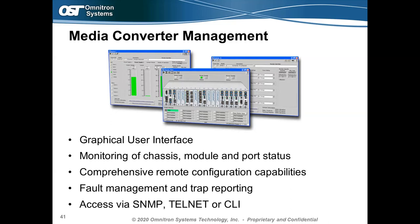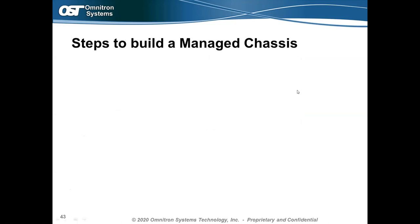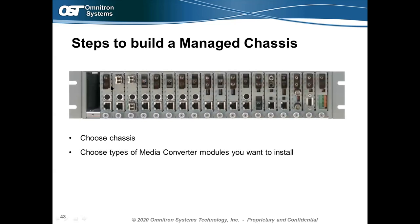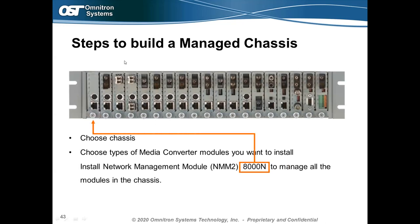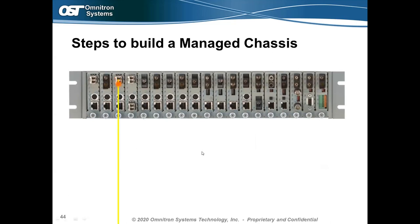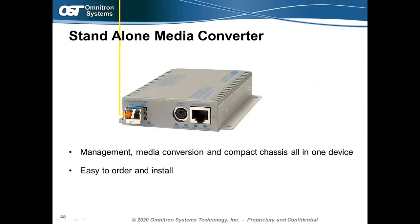Building a managed chassis is straightforward: pick a chassis, populate it with the required media converter models, then install a network management module in slot one — it communicates with all other cards and sends management commands. If you don't want to sacrifice that slot, you can insert a media converter that also acts as the management module, such as the GXTM2 or GM3. From there, run fiber from any media converter to a remote chassis or standalone media converter.